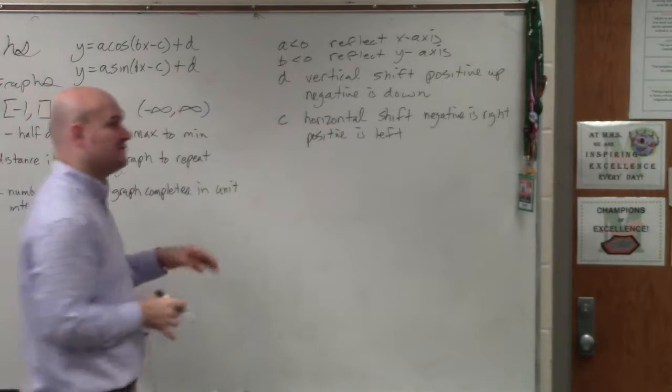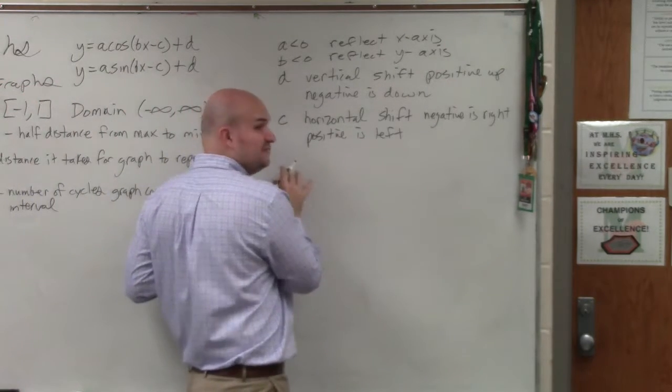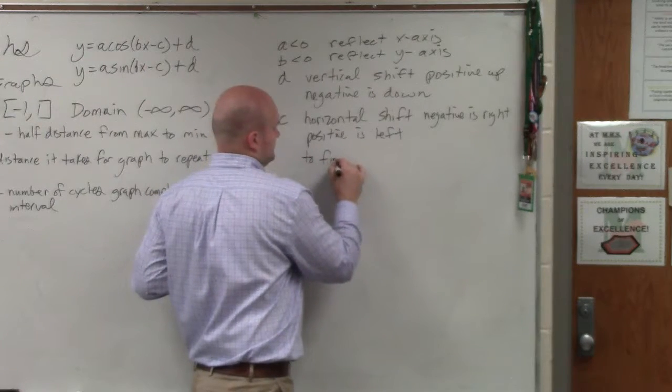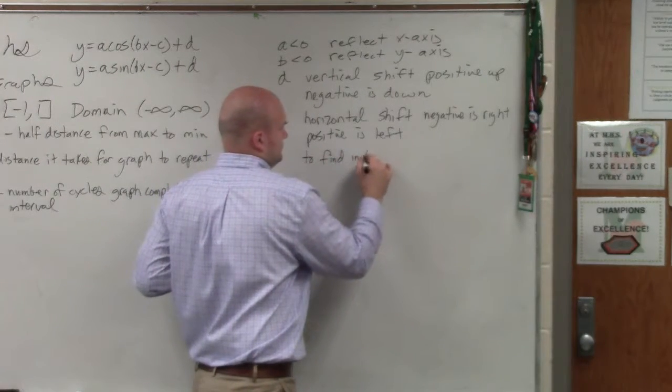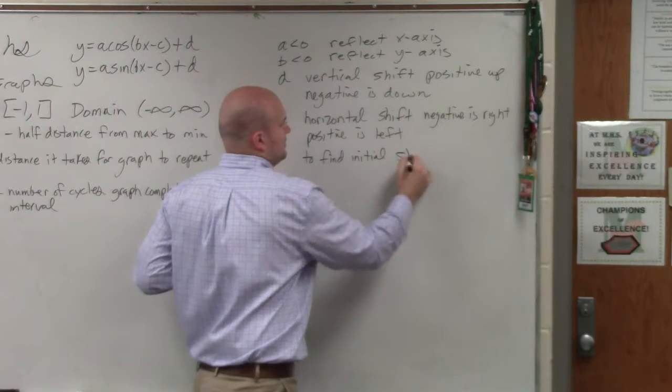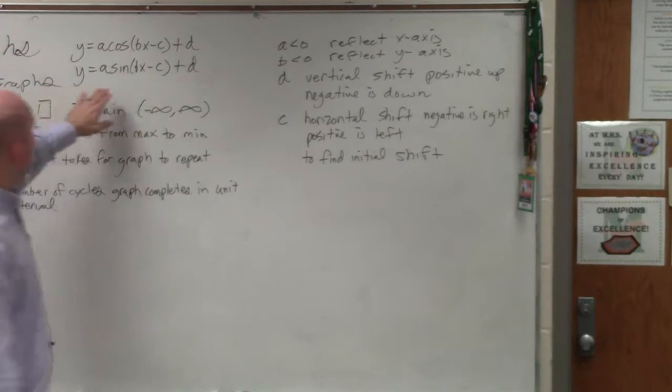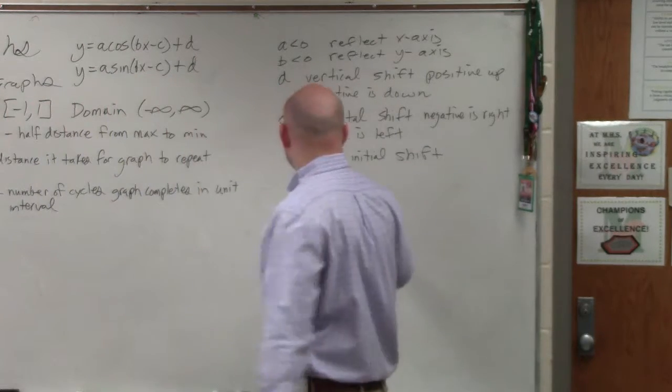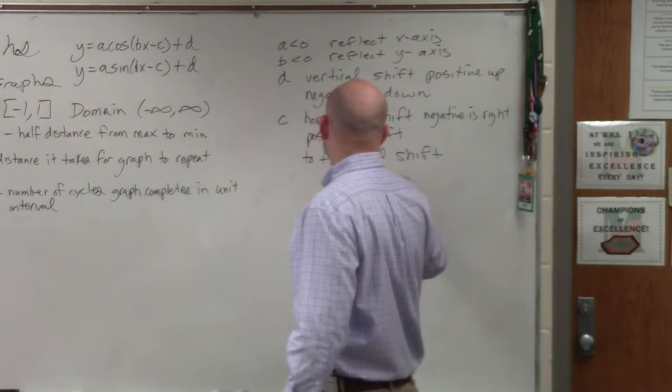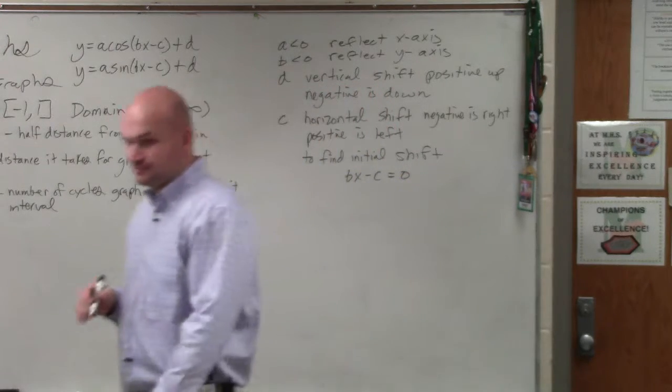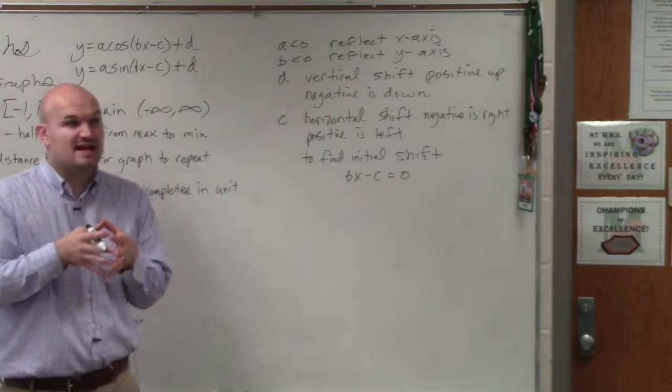The other thing I really want you to be careful with to find the shift, what you need to do is don't always look at c, because remember there's that b. So to find the shift, always take bx minus c, set it equal to 0. That's going to tell you what exactly that shift is.